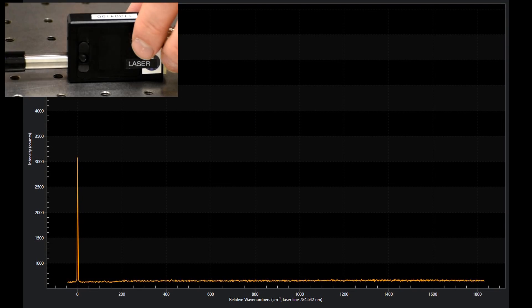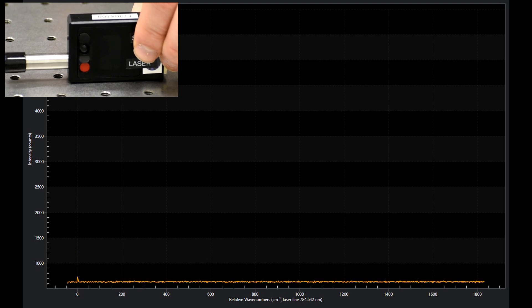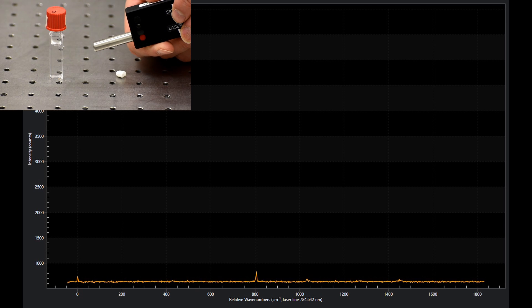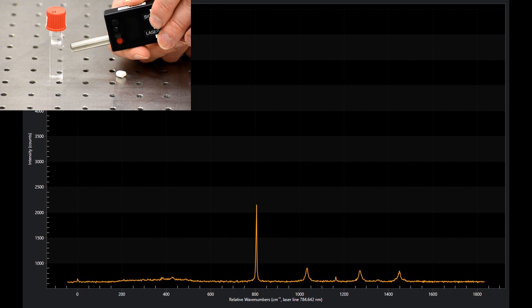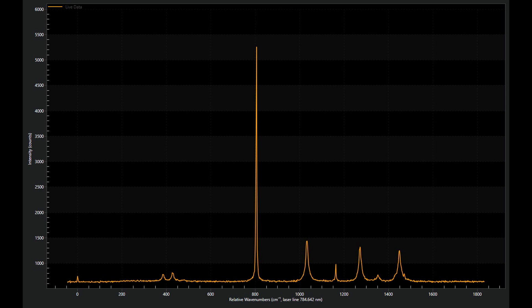Open the probe shutter to direct laser light out of the probe. Here we use cyclohexane and Tylenol samples. Place the probe in 5 to 10 millimeter distance of the sample for optimal signal strength and collect the Raman spectra.